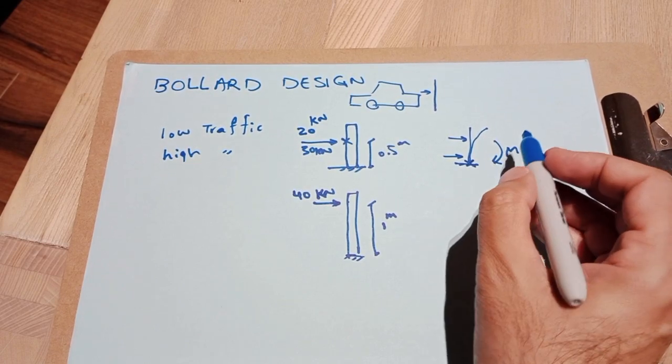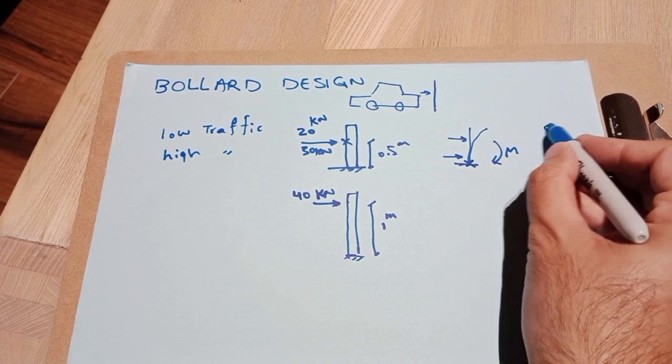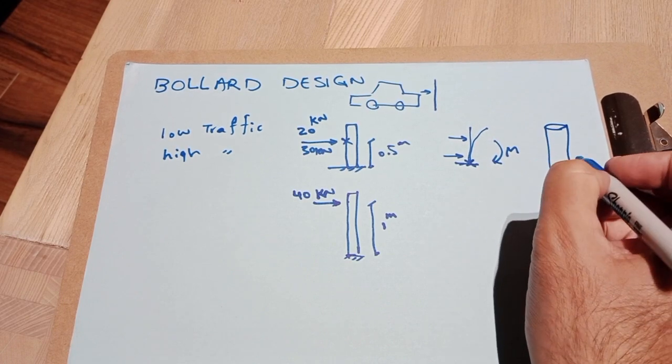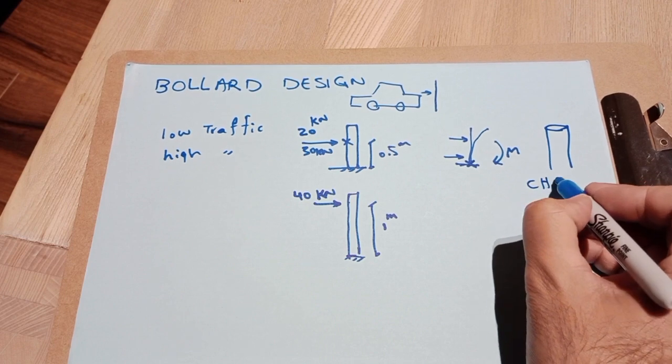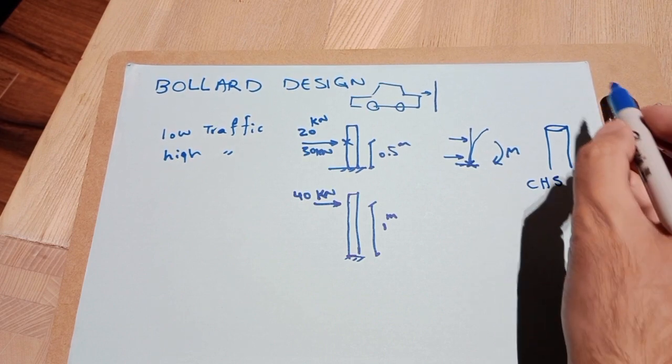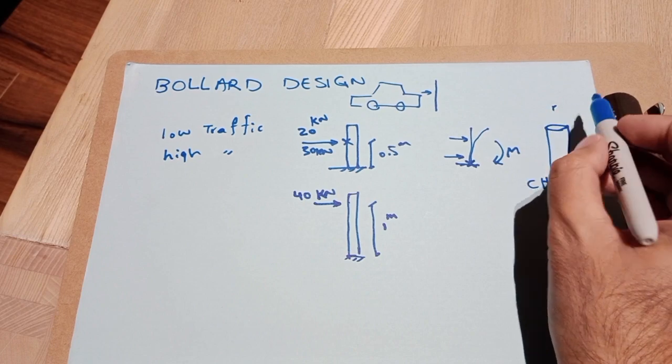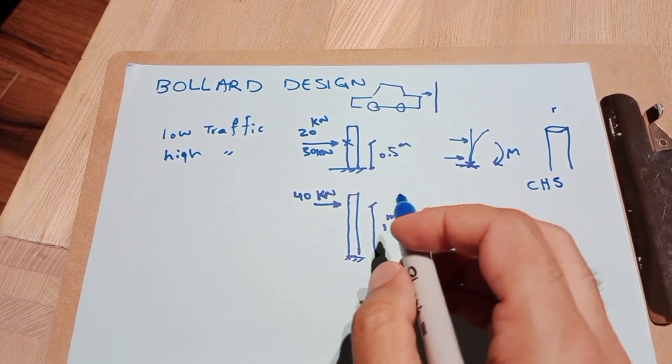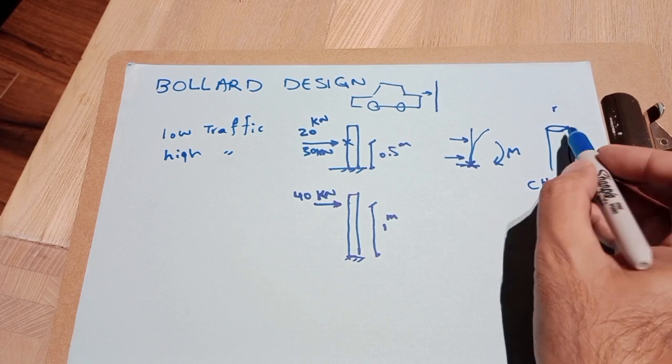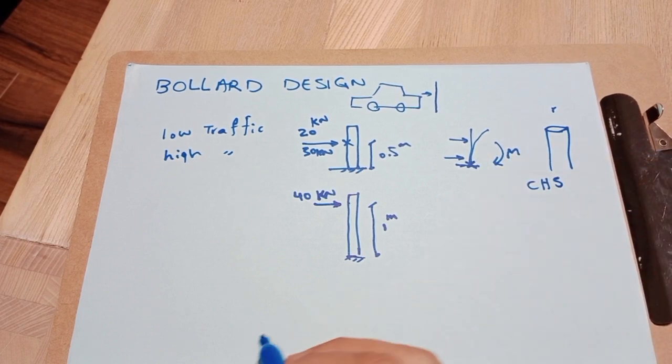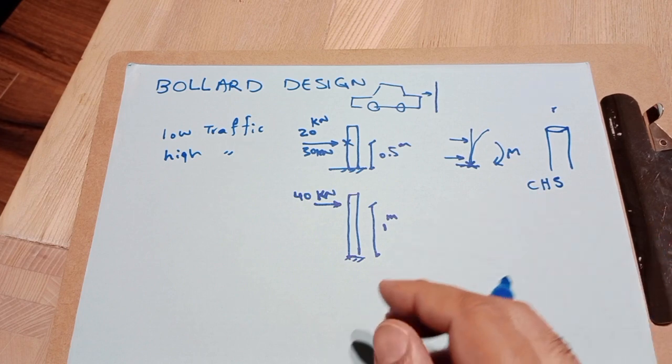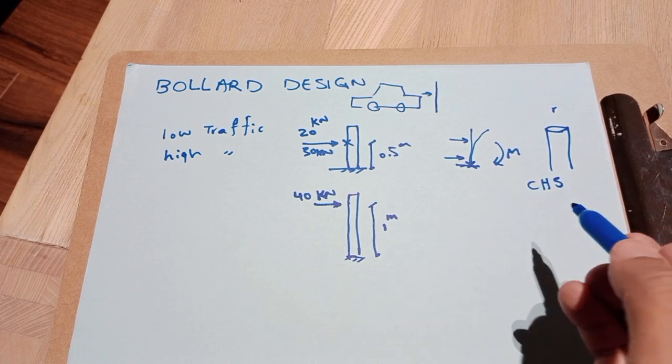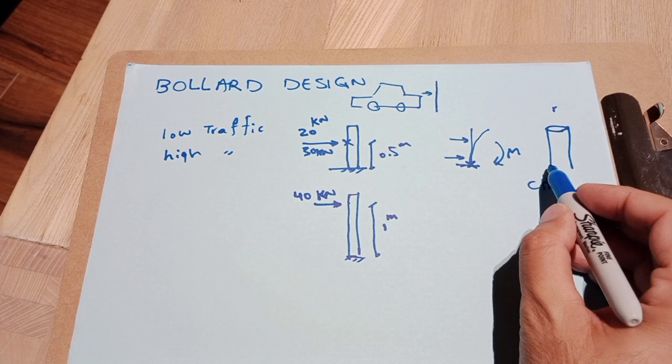It gives you the section you need to take that load. The best section is always circular hollow section (CHS) because it has r values same in all directions, and it is light. You need to pay less for the metal, for the steel.